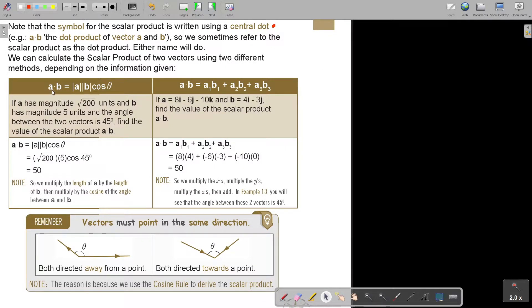The scalar product or the dot product of vector A and B. I take the magnitude of A, I take the magnitude of vector B and cos theta. If A has a magnitude of square root 200 units and B has a magnitude of 5 units, the angle between the two vectors is 45 degrees. Find the value of the scalar product A dot B. So, I just then fill it in and press it on my calculator. We multiply the length of A by the length of B, then multiply by the cosine of the angle between A and B.